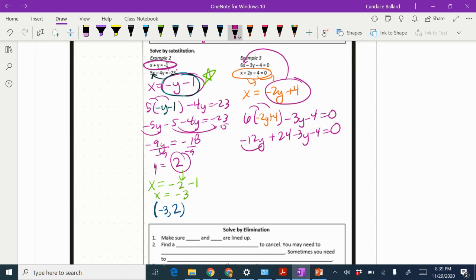So I get negative 12y plus 24 minus 3y minus 4 equals 0. I'm going to combine like terms. So negative 12y and negative 3y is going to be negative 15y. Positive 24 and negative 4 would be positive 20 equals 0. So I'm going to subtract the 20.